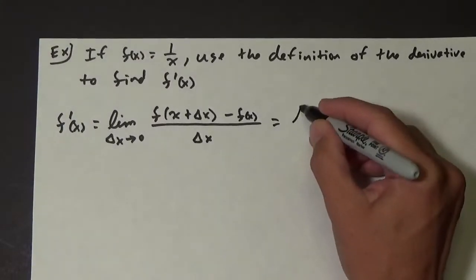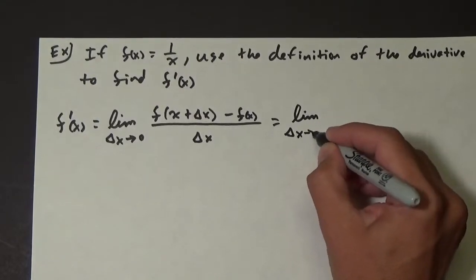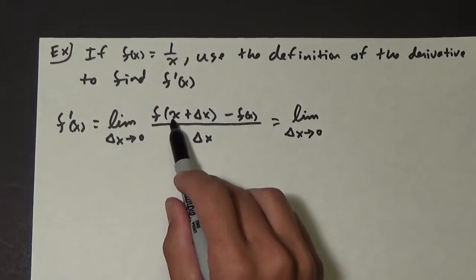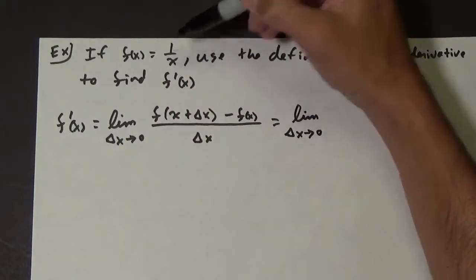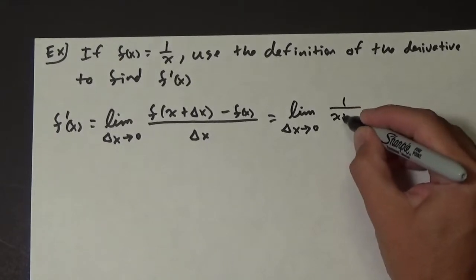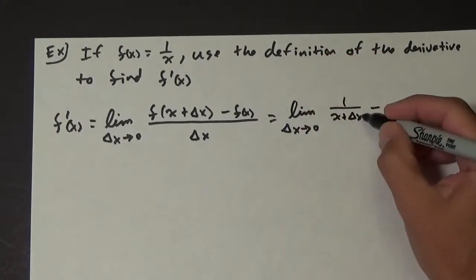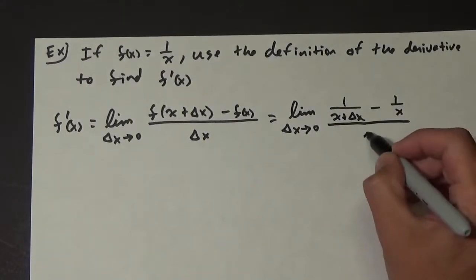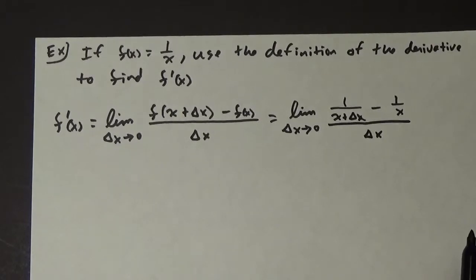So we're going to end up with the limit as delta x approaches zero. If we put in f of x plus delta x, that means we're going to have 1 over x plus delta x. Then minus f of x, which is 1 over x, all over delta x.